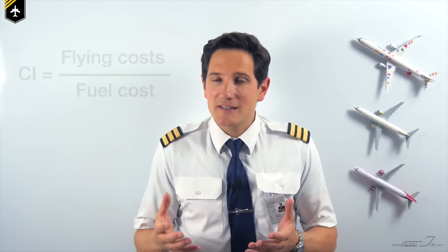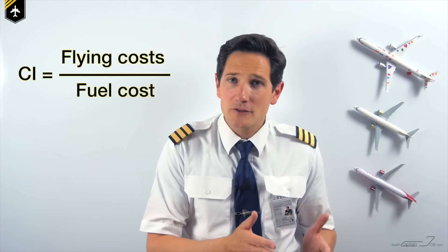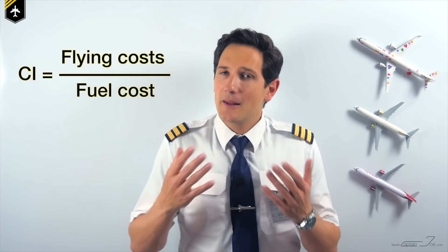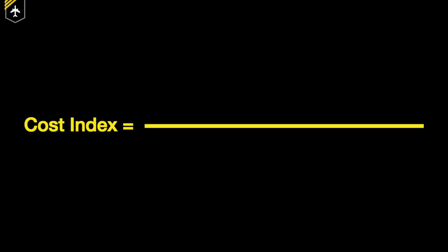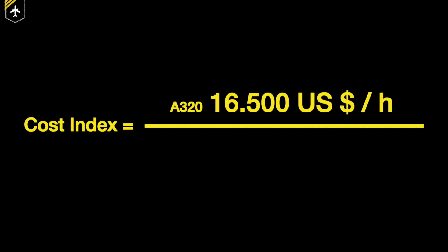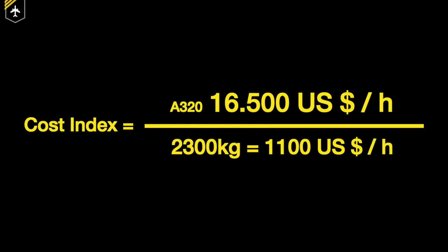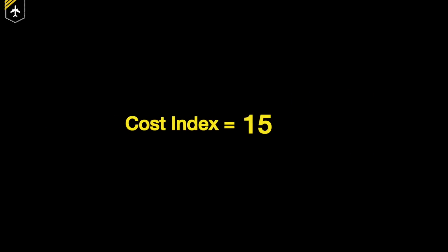The cost index value ranges from 0 to 999. To get the cost index, you need to divide the flying costs by the fuel cost per hour. For example, the flying costs of an Airbus A320 are roughly $16,500 per hour, including all the expenses mentioned before. The average fuel flow of an A320 is about 2,300 kilograms per hour, which equals $1,100 per hour. If you divide those two factors, you get the cost index for your flight.